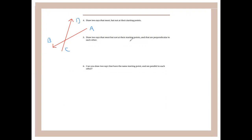Draw two rays that meet but not at their starting points and that are perpendicular to each other. Draw them intersecting at a right angle, with separate starting points, and label them — for example A, B and C, D. You can use any labels such as X, Y, W, Z. To illustrate perpendicularity, add the right angle symbol at the intersection — you should add this, otherwise you can't tell if it's perpendicular or not.